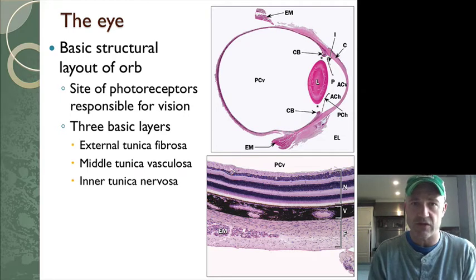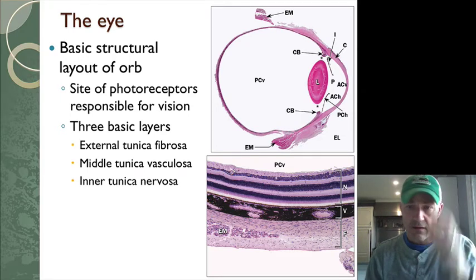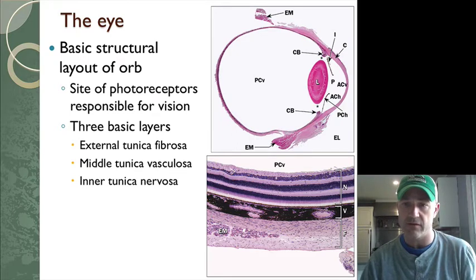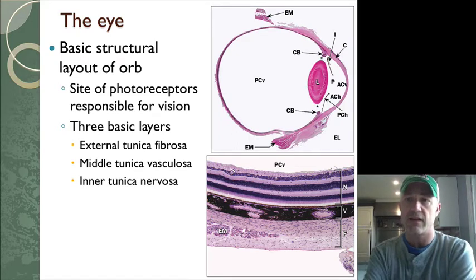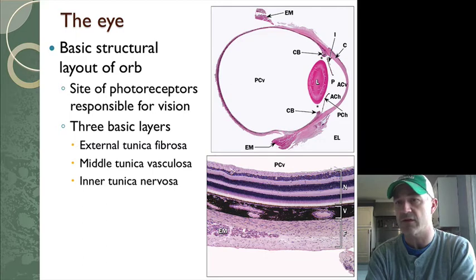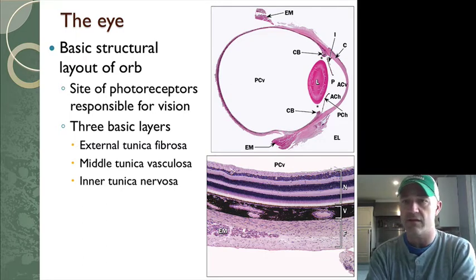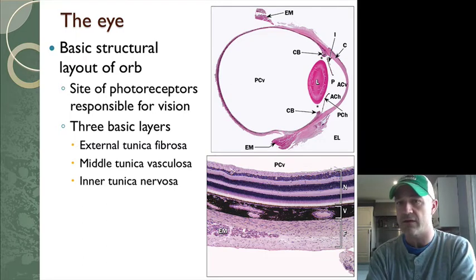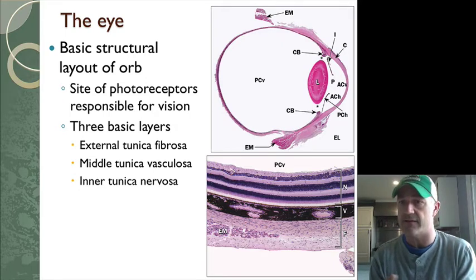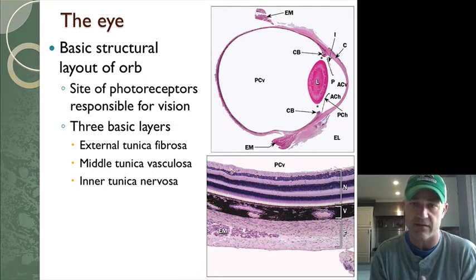As you can see on the bottom image, there's a number of different layers with a lot of nuclei. In the middle image you can see the back cavity, the front cavity, and the L is the lens with the iris coming in on each side.